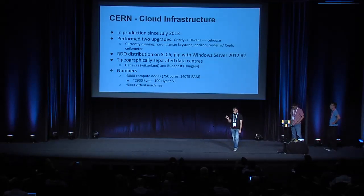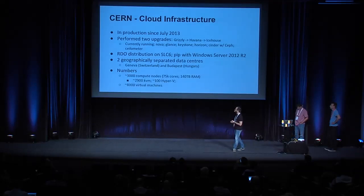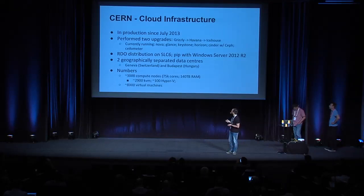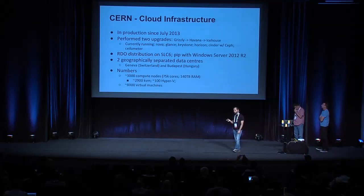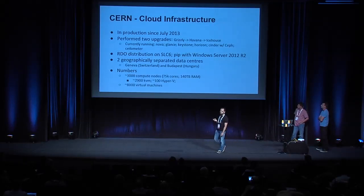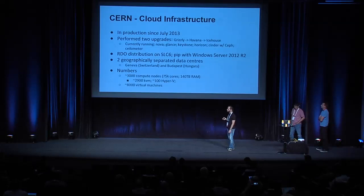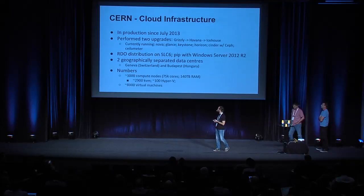To give these computational resources in a more efficient way to our scientists, we started deploying a cloud infrastructure that has been in production since July 2013, based on OpenStack. At that time it was the Grizzly release. Since then we've done two upgrades — from Grizzly to Havana — and last month we just finished the upgrade to Icehouse. In our cloud infrastructure we are running two virtualization technologies: KVM for Linux compute nodes and Hyper-V for Windows compute nodes.